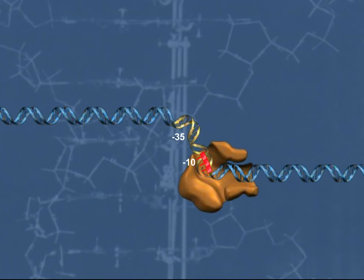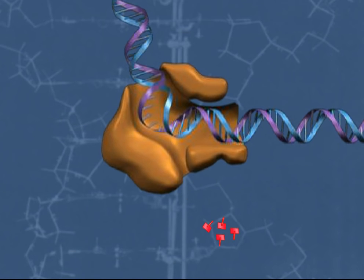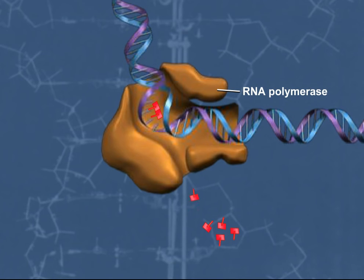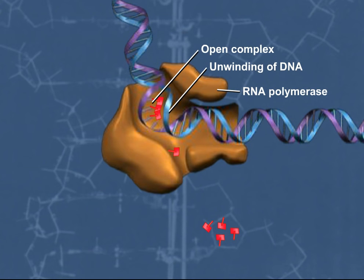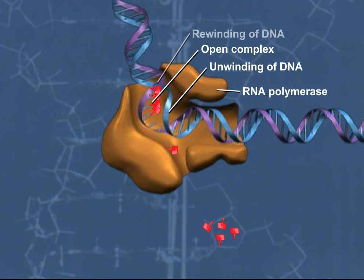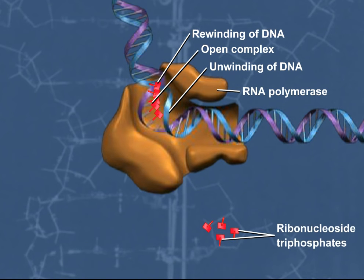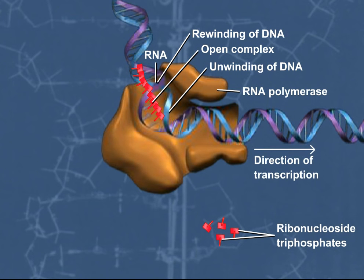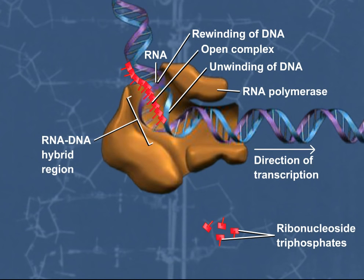As elongation of the transcript continues, the RNA polymerase moves down the DNA molecule and the next sequence in the chain is opened up. As RNA polymerase moves down the DNA strand, the DNA molecule entering RNA polymerase unwinds, forming the open complex, while the DNA exiting RNA polymerase rewinds to form a double helix. Ribonucleotide triphosphates are added to the chain and the growing RNA transcript continues to elongate as new DNA sequence enters the open complex region. The new RNA transcript initially forms an RNA-DNA hybrid complementary to the template strand, corresponding to the sequence of the coding DNA strand.